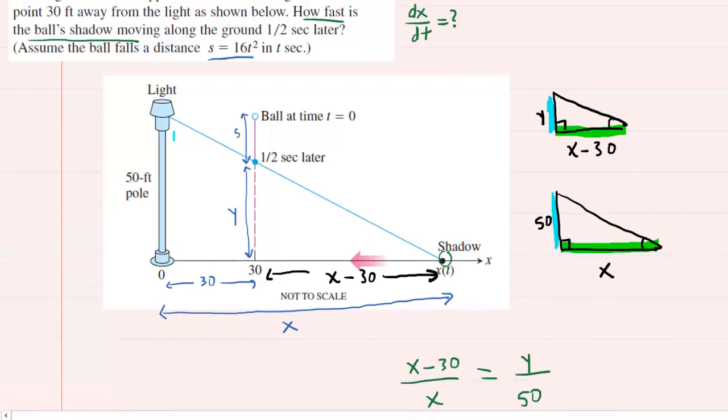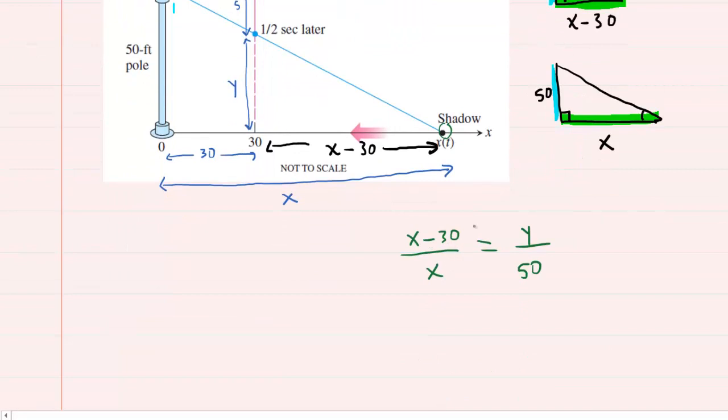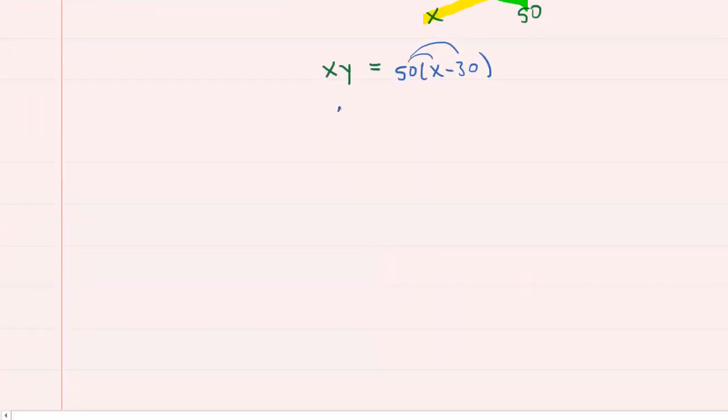So we need a derivative. We have to differentiate our equation with respect to time. But before doing that, why don't we go ahead and cross multiply. So we're going to multiply this way. We would get x times y. And then we can set that equal to cross multiplying the other way. So we would have 50 being multiplied by x minus 30. Let's go ahead and distribute the 50. So now we have xy equals 50x minus 1500.